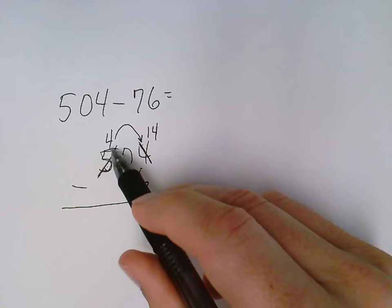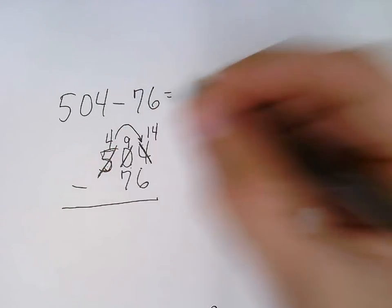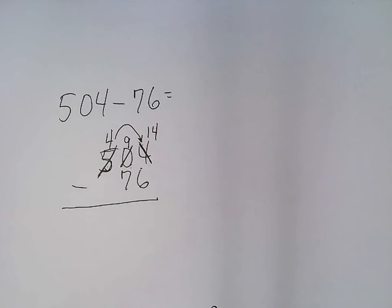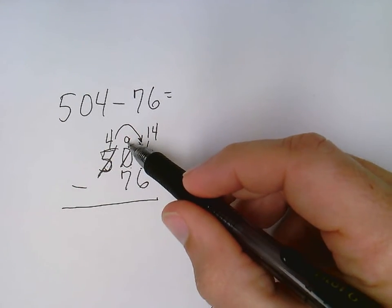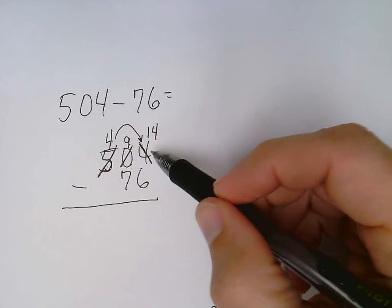The person that we borrowed across, they're still going to get something. They're still going to get 9 cookies. So anytime I borrow across a zero, that zero is going to become a 9, and the person who needs the cookies is going to get 10 more.